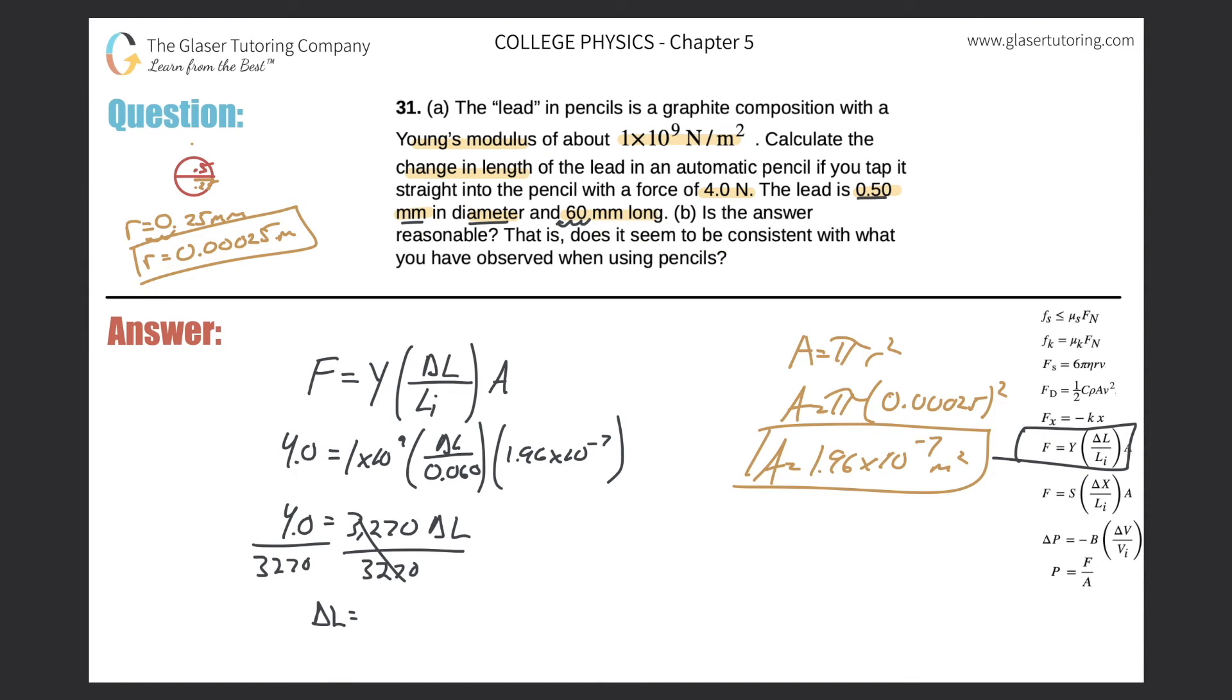So then divide both sides by 3,270. The change in length of the pencil will be 4 divided by 3,270, so it comes out to be 1.22 times 10 to the minus 3 meters.